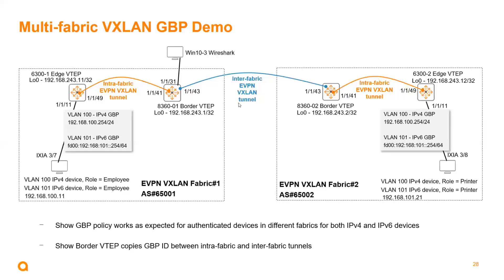With that, I'll hand over to Corey for the demo. Okay, thanks Daryl. Let me go ahead and share my screen. Quick audio-visual check — okay, great. So here's what we're going to show: the multi-fabric VXLAN GBP demo. We have two 8360s acting as the border VTAPs and two 6300s acting as the access VTAPs, two fabrics with AS65001 and AS65002.